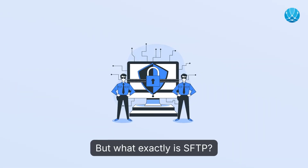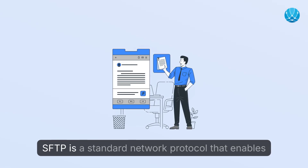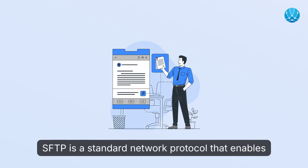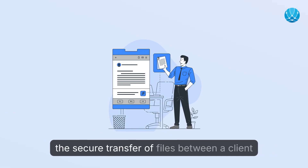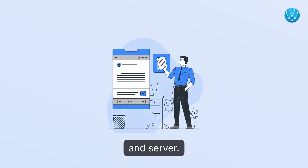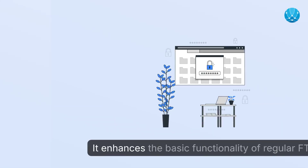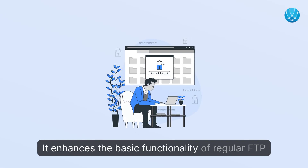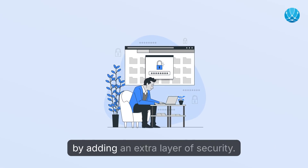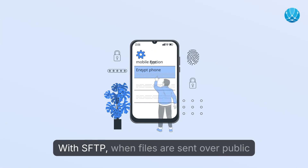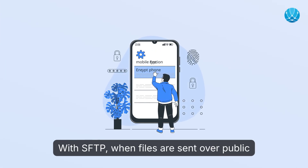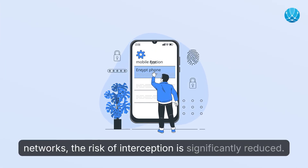But what exactly is SFTP? SFTP is a standard network protocol that enables the secure transfer of files between a client and server. It enhances the basic functionality of regular FTP by adding an extra layer of security. With SFTP, when files are sent over public networks, the risk of interception is significantly reduced.